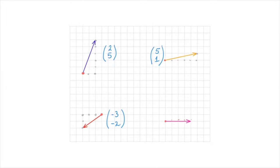And that's all we have to do. We don't need to move upwards or downwards in any way. So this vector has coordinates 4, 0. And we're done.